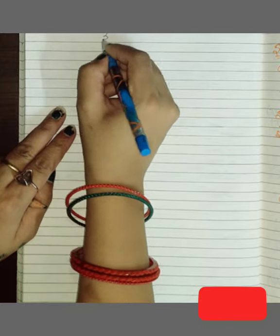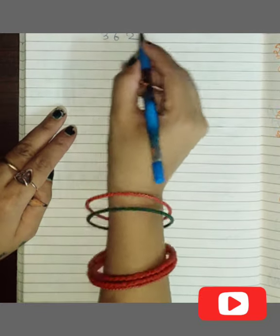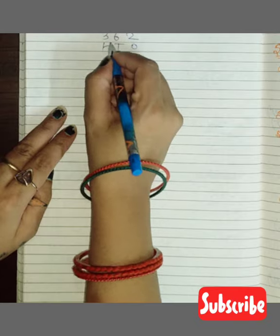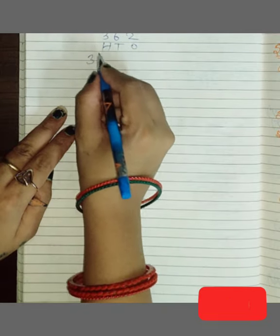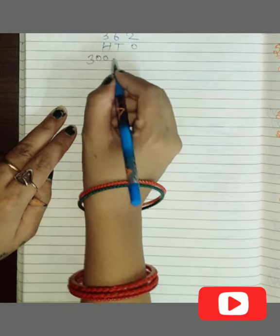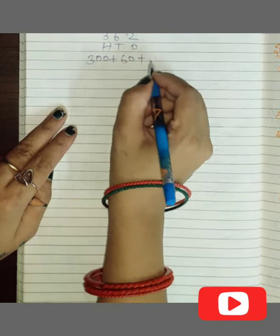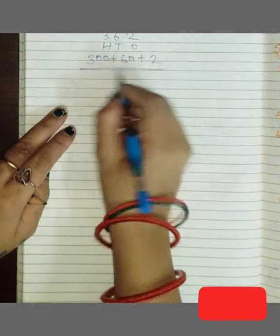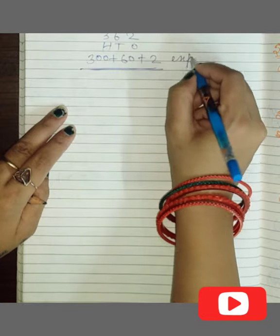Suppose I am writing here 362. So it will be labeled ones, tens, hundreds. So this is what? 300 plus 60 plus 2. This is the expanded form.